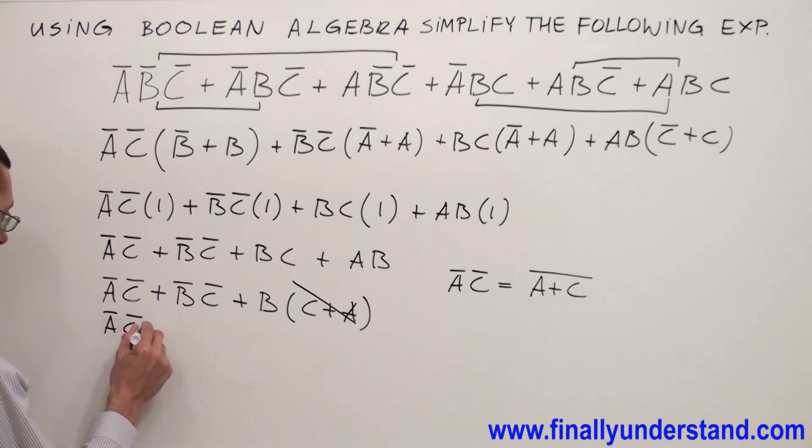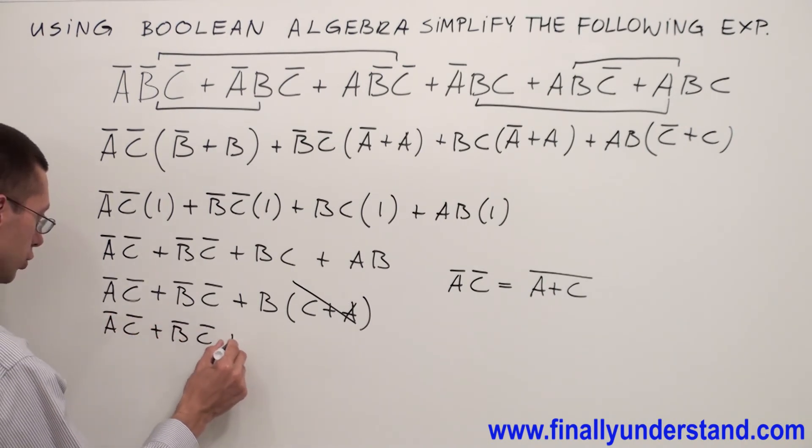So take a look what I'm going to have. I'm going to have A̅C̅ or B̅C̅ or B.